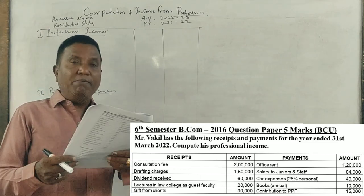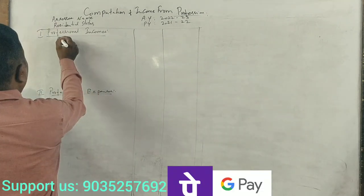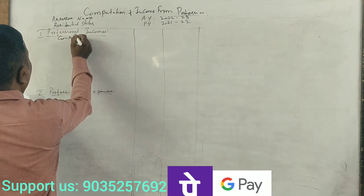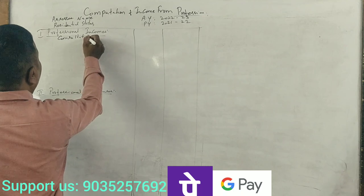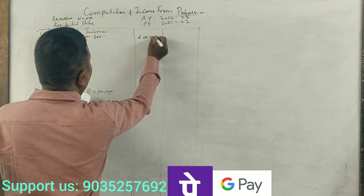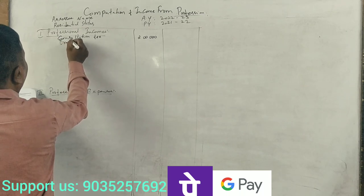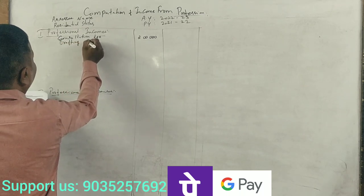First item, consultation fee. For a lawyer, this is professional income. The consultation fee is about 2 lakhs. Next is drafting charges, which is income from drafting work.